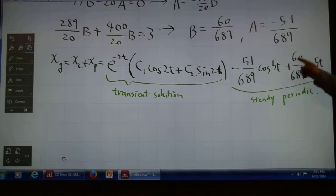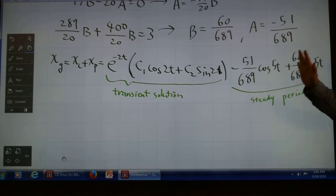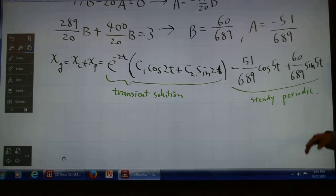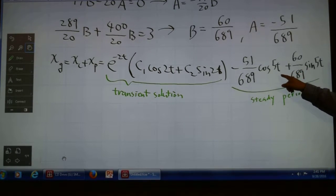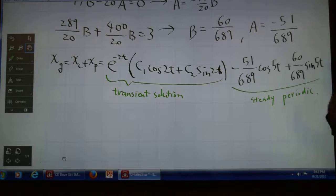The steady periodic solution will always have the same angle frequency as the input external force. In electrical circuits, there's the input voltage (AC, alternating current). The system will behave with this steady periodic one that has the same frequency. The only difference is different amplitudes and some lag—that's the phase angle.